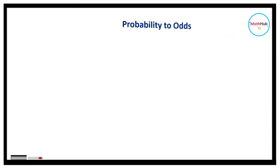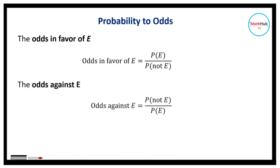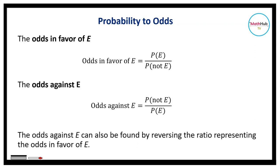Now let's look at probability to odds. The odds in favor of E are found by taking the probability that E will occur and dividing by the probability that E will not occur. Similarly, the odds against E are found by taking the probability that E will not occur and dividing by the probability that E will occur. The odds against E can also be found by reversing the ratio representing the odds in favor of E.